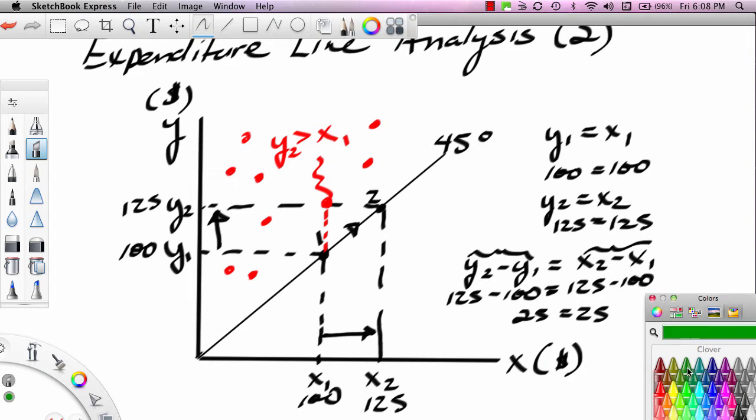And then we can just do the opposite side of this. We can say that if you're below the 45-degree line, say at this point, easy point for us to talk about, you're at x2, 125, you're corresponding with y1, 100. And so, what can we say here? We can say the x variable, whatever it is, is greater than the y variable, whatever it is. x2 is greater than y1.